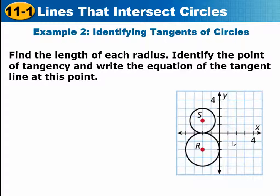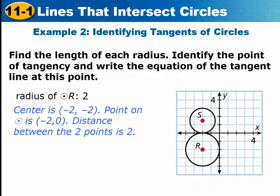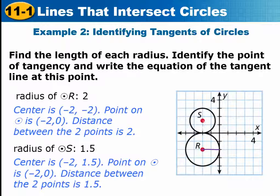This one says, find the length of each radius, identify the point of tangency, and write the equation of the tangent line at this point. So for circle S, well, first they're doing circle R. Circle R is easier because here's the center. The radius goes from there to there, and you can see it's a distance of two units. The other one has a radius of 1.5. It's a little hard to tell that one. But if you go from here straight down, there's one unit and another half unit.